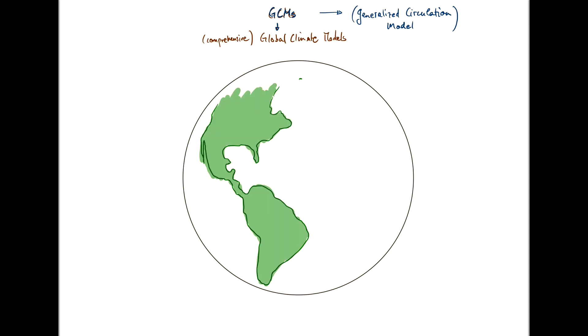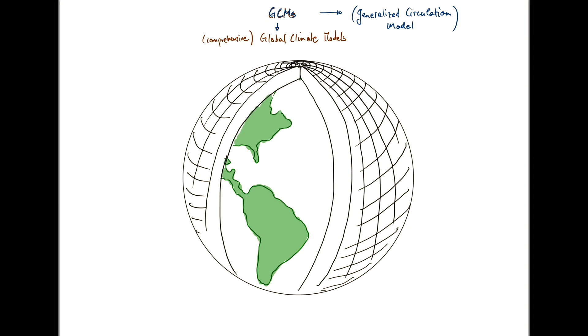So, a GCM takes the globe and partitions it into lots and lots of little grid boxes. So, there is horizontal and vertical grids. I'm going to try and illustrate this here visually. So, what I've represented here so far are essentially the atmospheric cells, grid cells, of our model. And they're overlaid over the land surface.